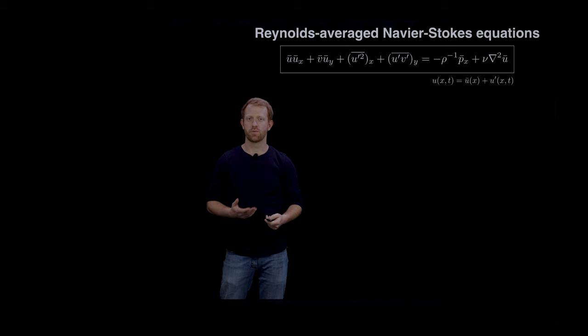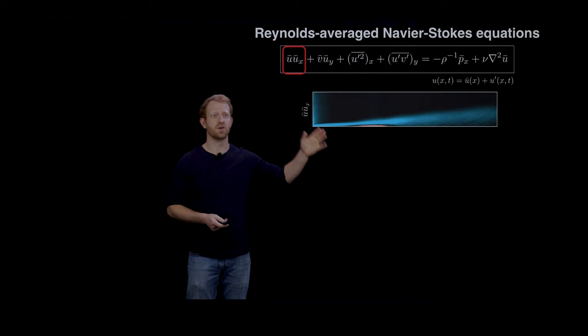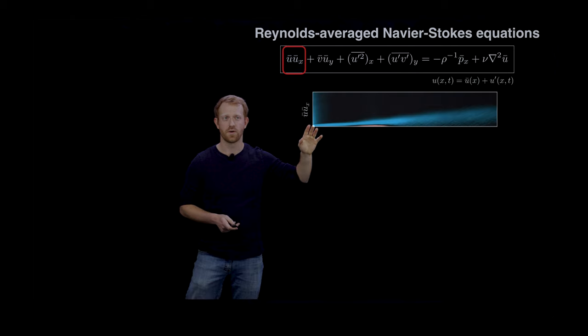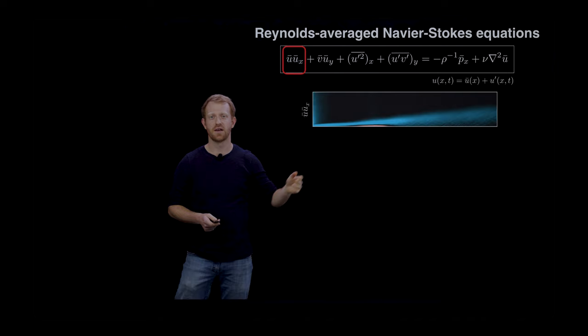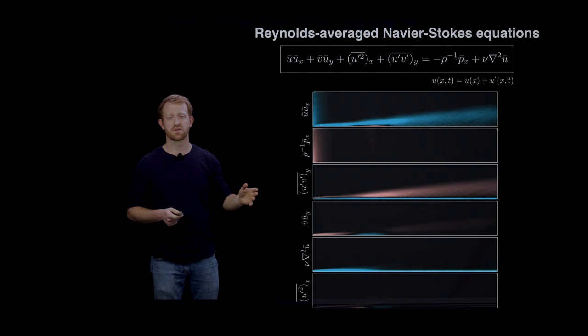In this case we can actually visualize the dominant balance pretty easily by just plotting the value of the terms across the domain. This is the streamwise component of mean flow advection, and the instantaneous fields have been averaged in time and in the spanwise direction. We can repeat this for the other five terms in the equation.